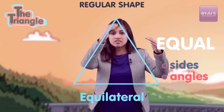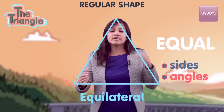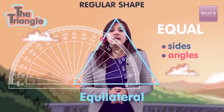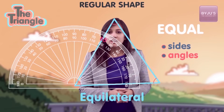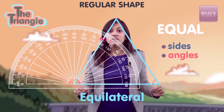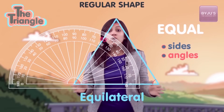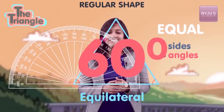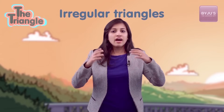We draw it like this and we call it an equilateral triangle — three equal sides, three equal angles. The angles of an equilateral triangle are always equal to 60 degrees.